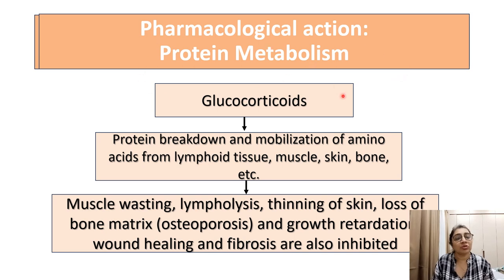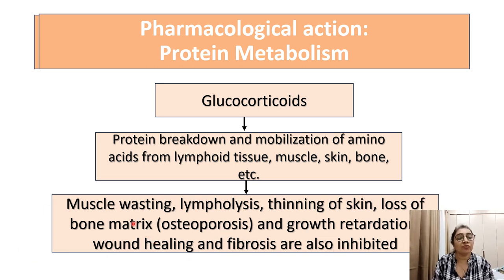Effect of corticosteroids on protein metabolism: breakdown and mobilization of amino acids from lymphoid tissue, muscle, skin, and bone occurs. This ultimately leads to muscle wasting, lympholysis, thinning of skin, loss of bone matrix, and growth retardation. Bone healing and fibrosis are also inhibited.